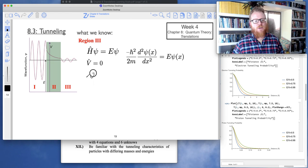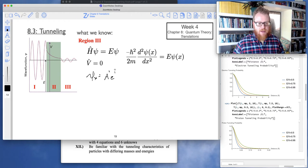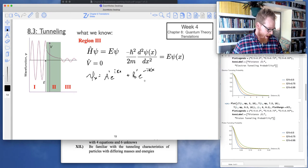So then I'll just write directly the region three solution. We know it's going to be a prime e to the ikx plus b prime e to the negative ikx, which again is describing a particle moving.